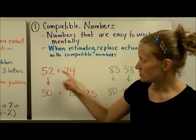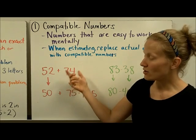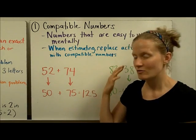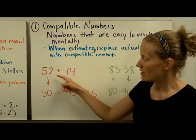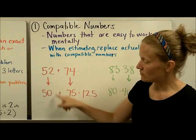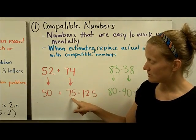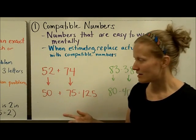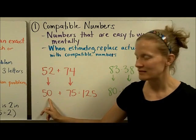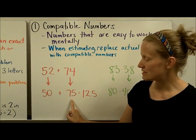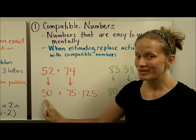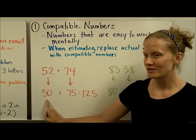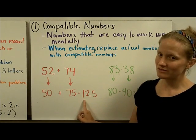Let's look at two examples. I have these two numbers, and I can quickly add them by thinking about other numbers that are easy to do using mental math. I can change 52 to 50 and 74 to 75. These are good picks because I can think about quarters and money — like 75 cents and 50 cents. So if I think about 50 cents and 75 cents, in my mind I'm going to send one quarter over to make a dollar and then have 25 cents left, which gives 125 cents.